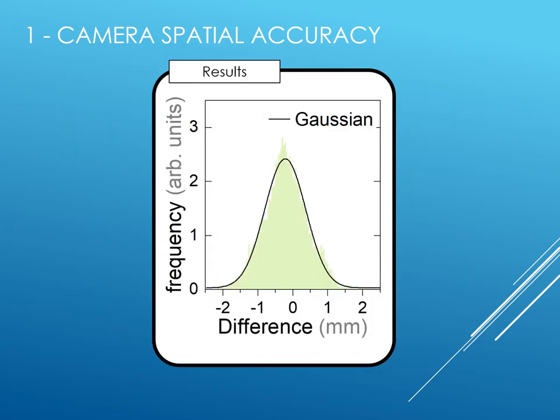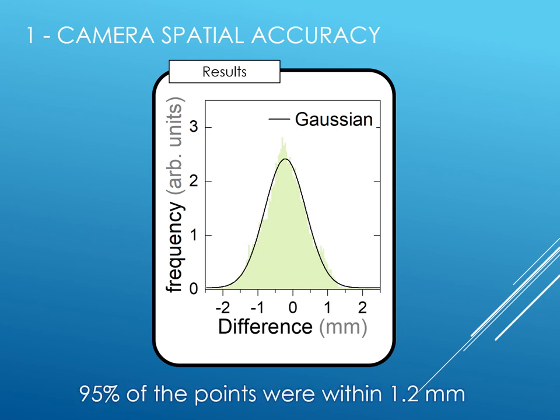Once registered, a histogram distribution of misalignment between the 3D surface and the CT surface was generated. As one can see, the 3D camera and the CT scan surfaces were found to have 95% of the points within 1.2 mm of the two body surfaces.